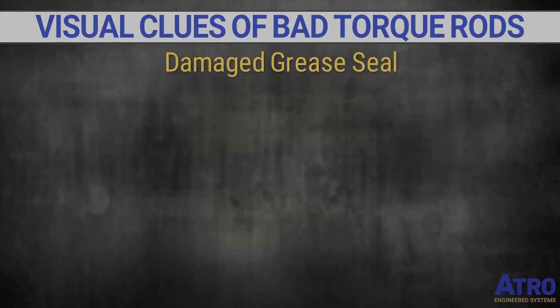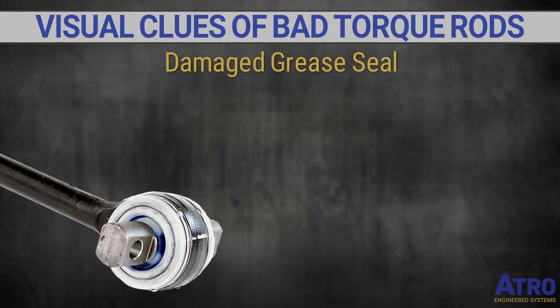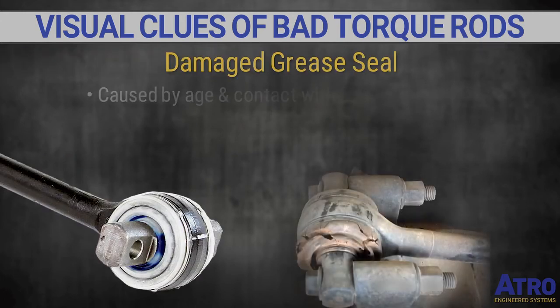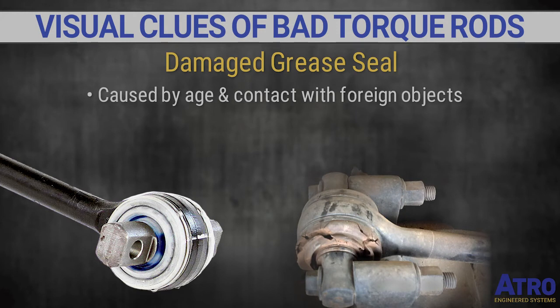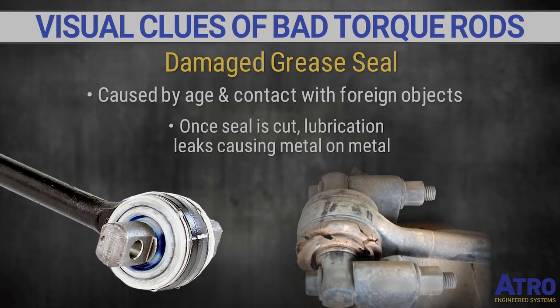Damaged grease seals and sealed ball-tie bushings are caused by age and contact with foreign objects. Once that seal is broken, the lost lubrication will cause a metal-on-metal situation.